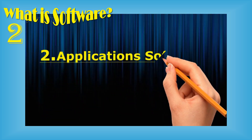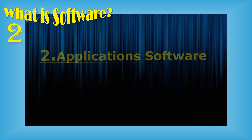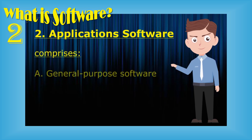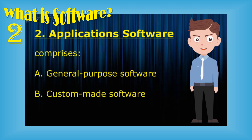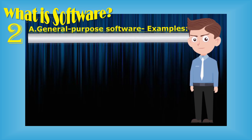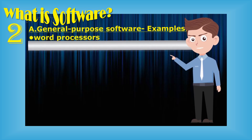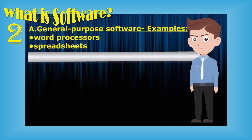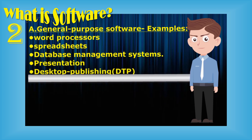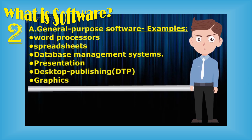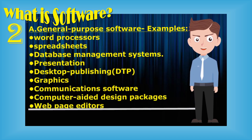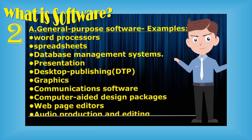The second type of software is application software. Application software comprises general purpose software and custom-made software. Examples of general purpose software include word processors, spreadsheets, database management systems, presentations, desktop publishing (DTP), graphics, communication software, computer-aided design packages, web page editors, and audio production and editing software.